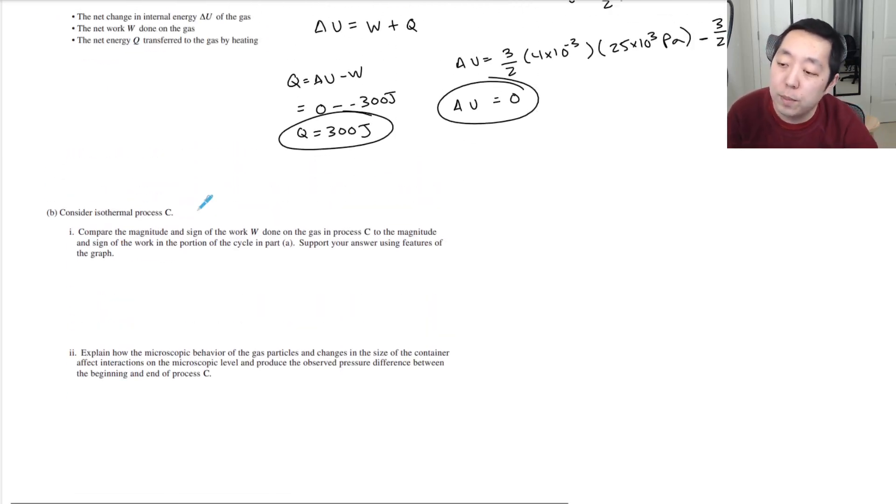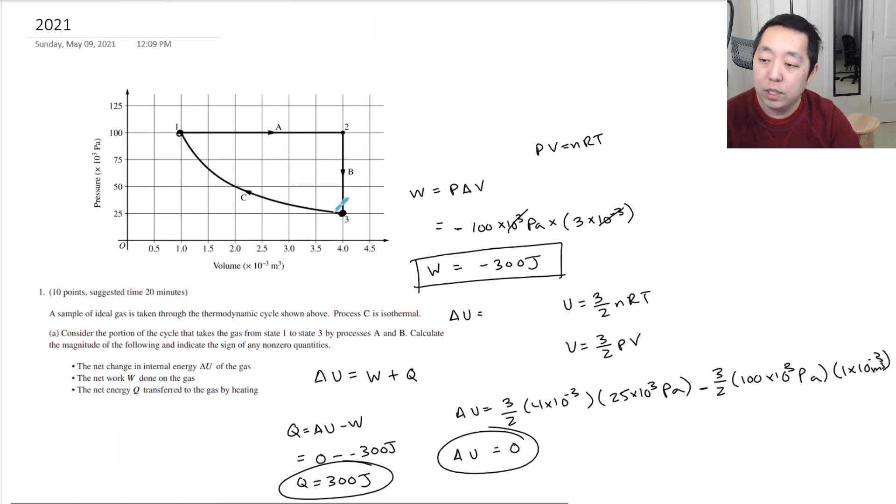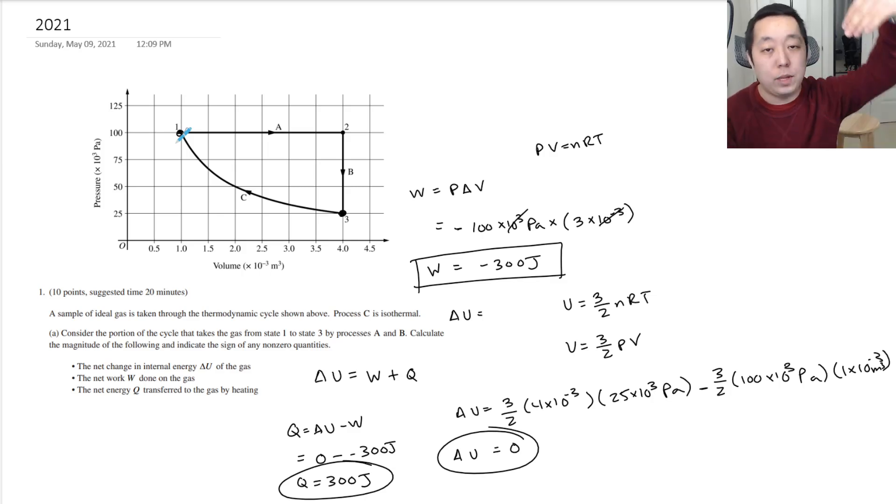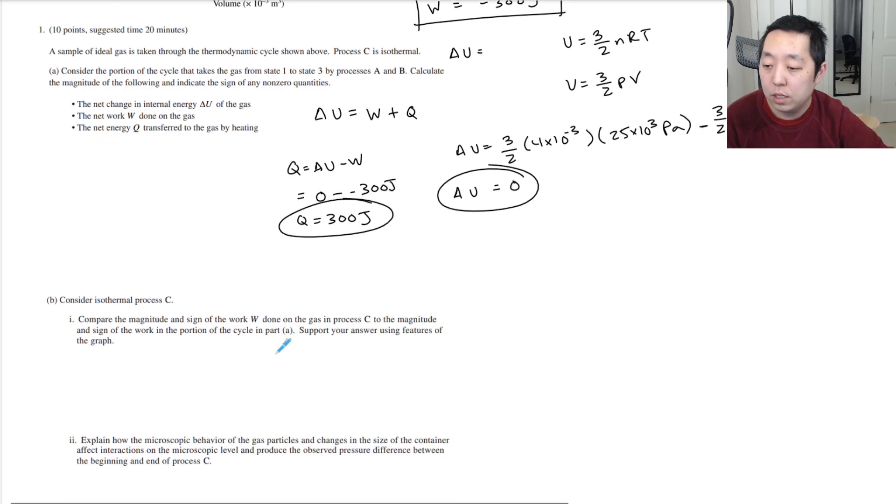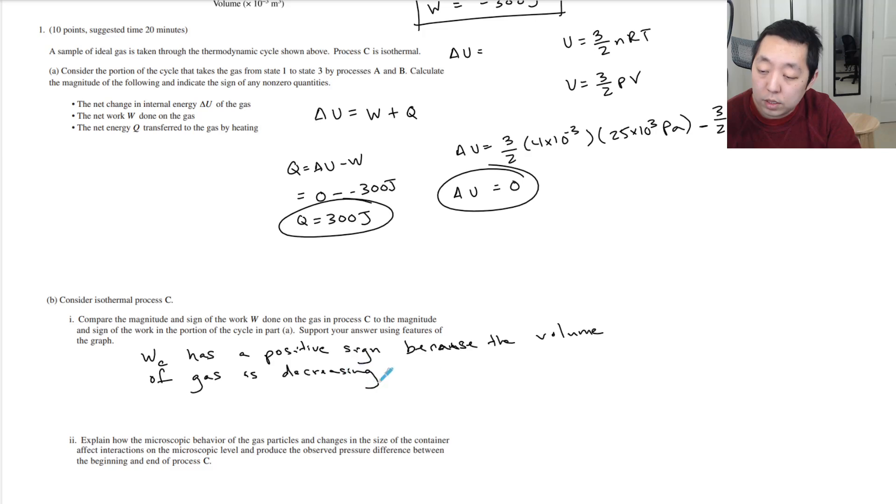Consider the isothermal process part C. Compare the magnitude and sign of the work done on the gas at process C to the magnitude and sign of the work in the portion and cycle of part A and support your answers using the feature of the graph. Well in this case, in terms of the sign of the work, what's happening in this scenario is that the gas is now being compressed. And if you compress the gas you are doing work on the gas because you are applying a force and you are displacing in the same direction. So you are compressing the gas so you are doing positive work on the gas.